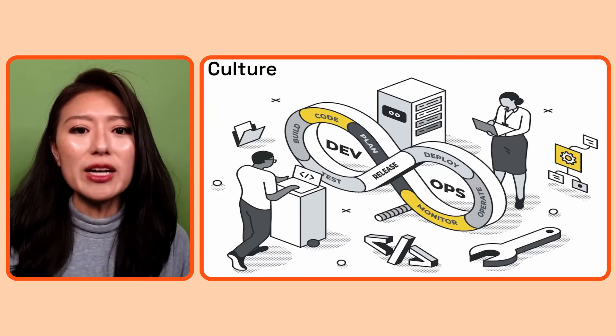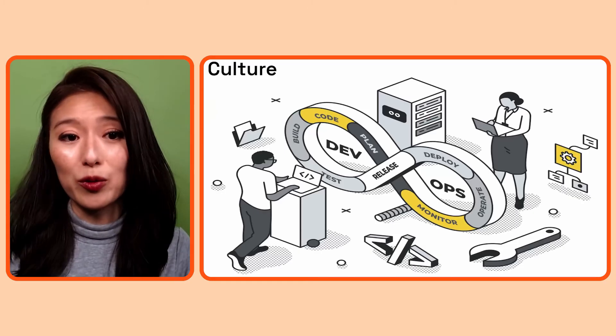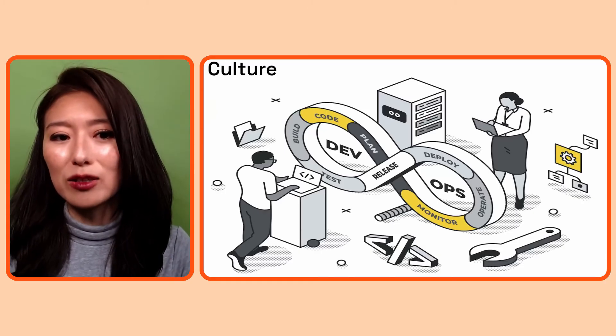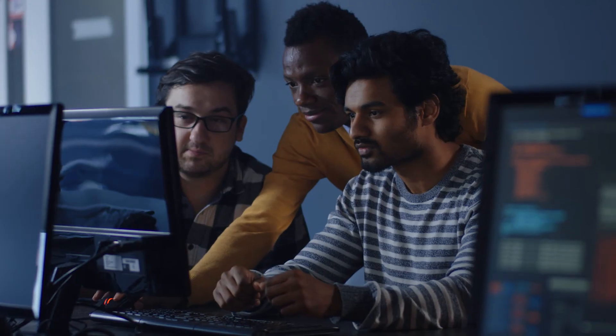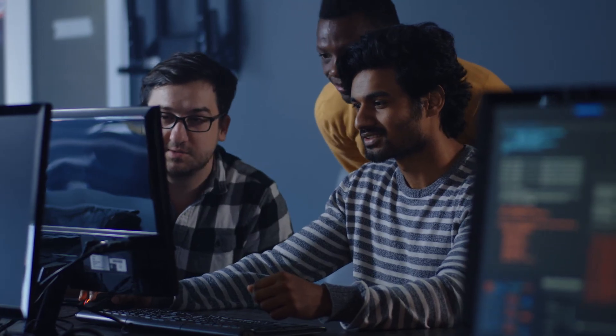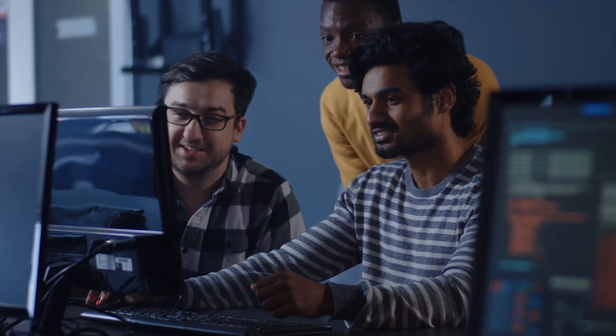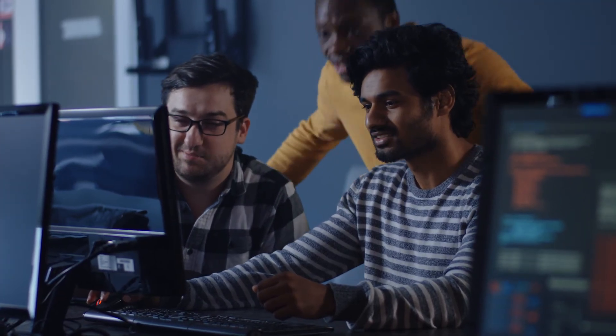DevOps aims to achieve this by removing silos between teams. It creates a collaborative workspace where everyone is responsible for creating and delivering great software, no matter which team they are a part of. The teams are encouraged to align their incentives, share their knowledge and ideas, and cooperate so they can work from a place of trust, rapport, and respect. This cultural shift is reflected in the software delivery process.